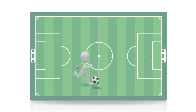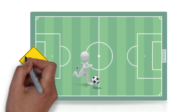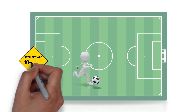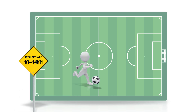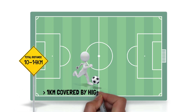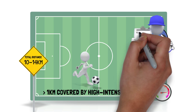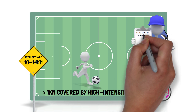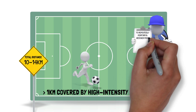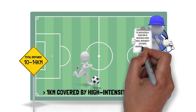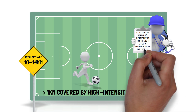Soccer players cover total distances ranging between 10–14 km, with more than 1 km being covered by high-intensity running. To be able to repeatedly perform and recover from high-intensity efforts, aerobic fitness is essential.